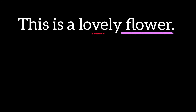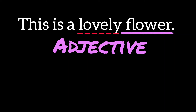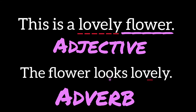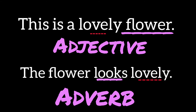This is a lovely flower. Here the word 'lovely' tells us about the flower, so it is an adjective. But if I say 'the flower looks lovely,' then it is about how does the flower look — it is about the verb 'look.' So 'lovely' becomes an adverb here. Remember that the word should describe a verb to be an adverb.